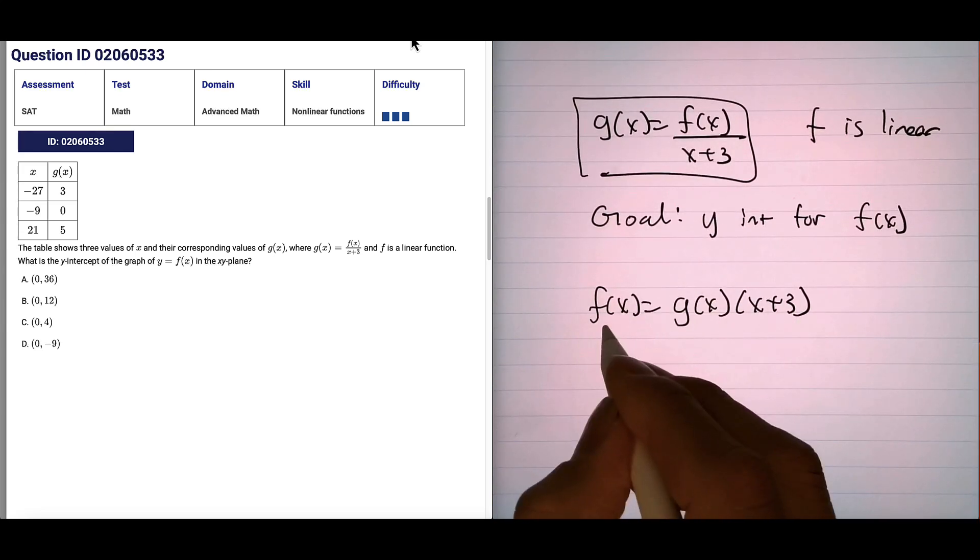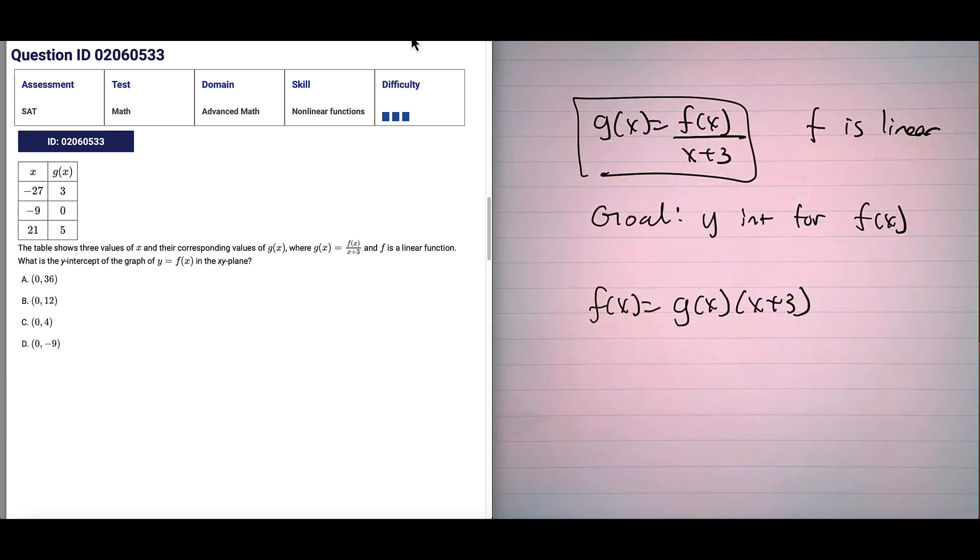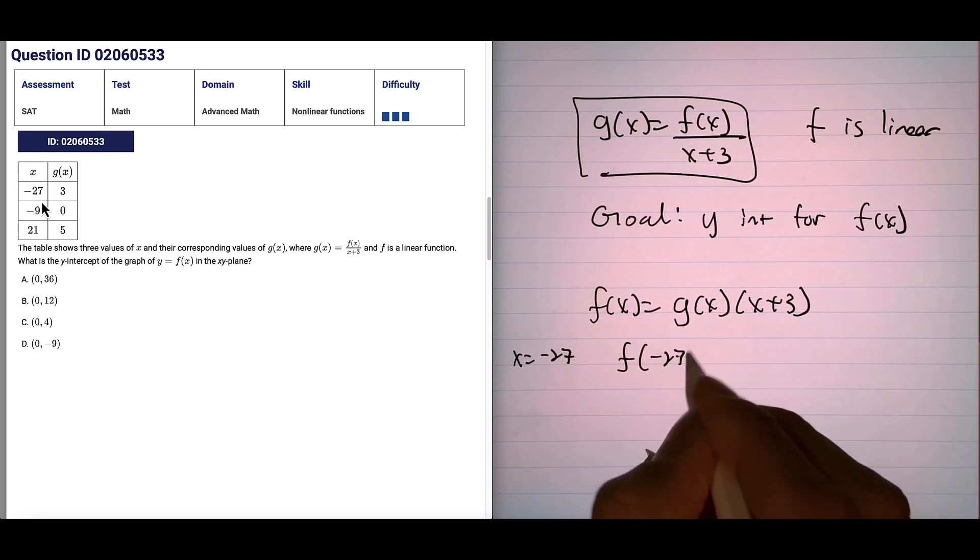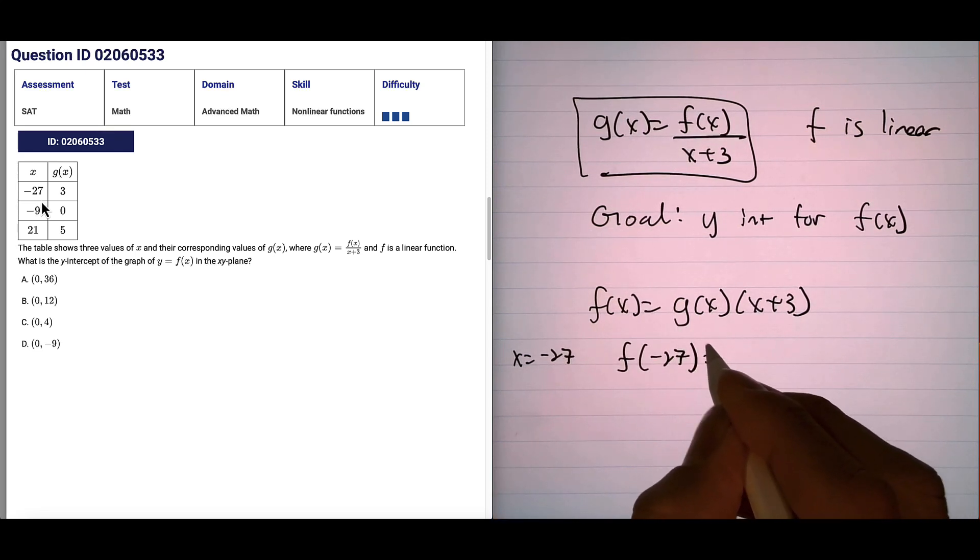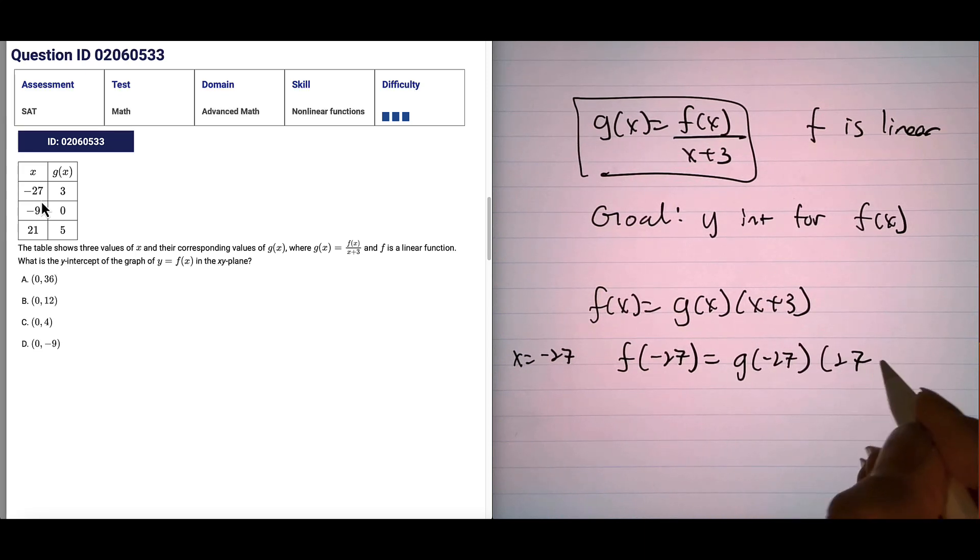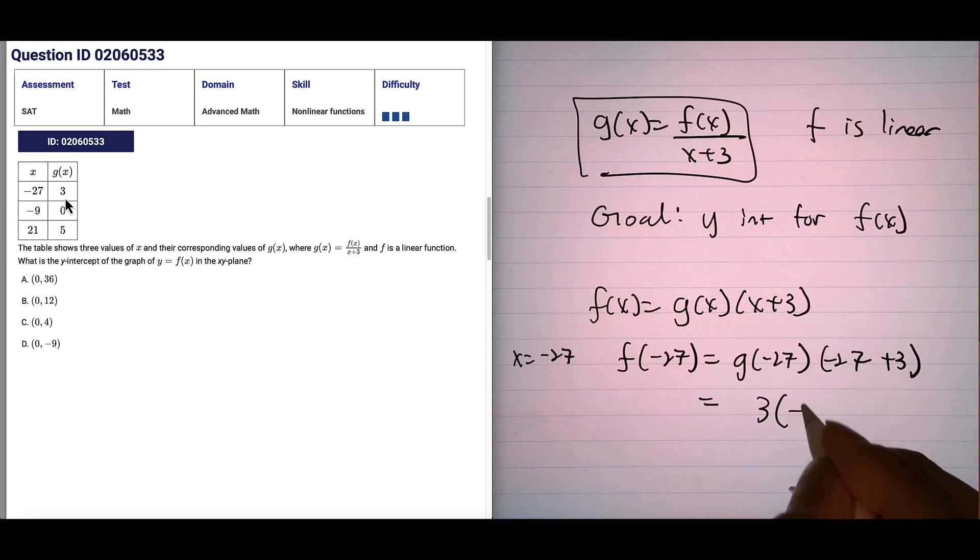So let's construct f of x by using the table values. If you say x equals negative 27, we plug in negative 27 into x. And g of negative 27, actually negative 27 plus 3. So g of negative 27 in the first row in our table is 3, and negative 27 plus 3 will give you negative 24, and this gives you negative 72.